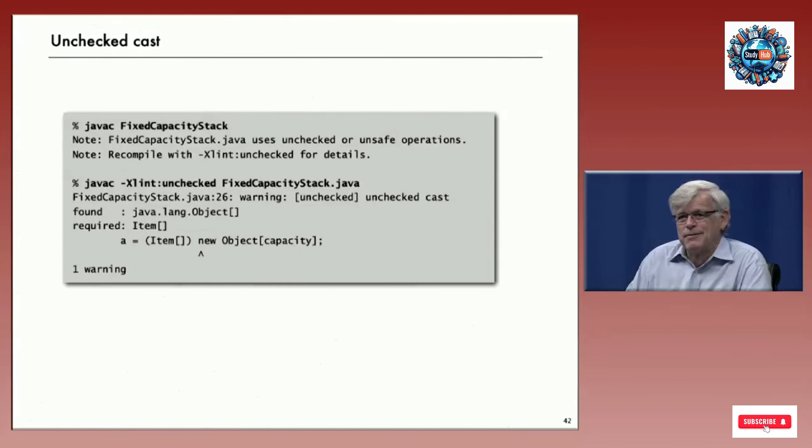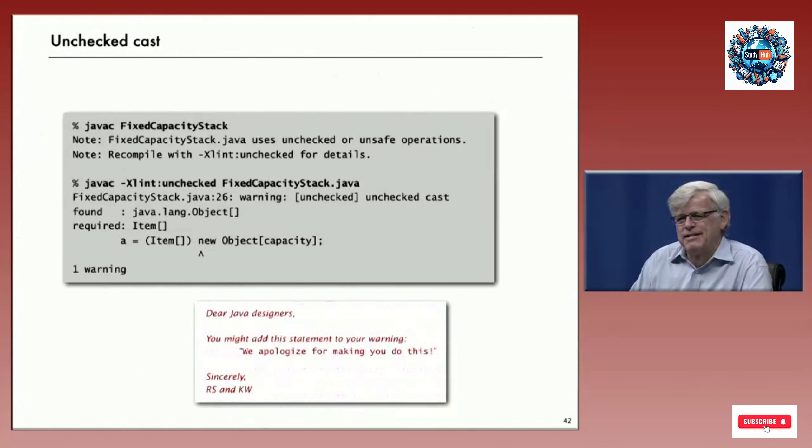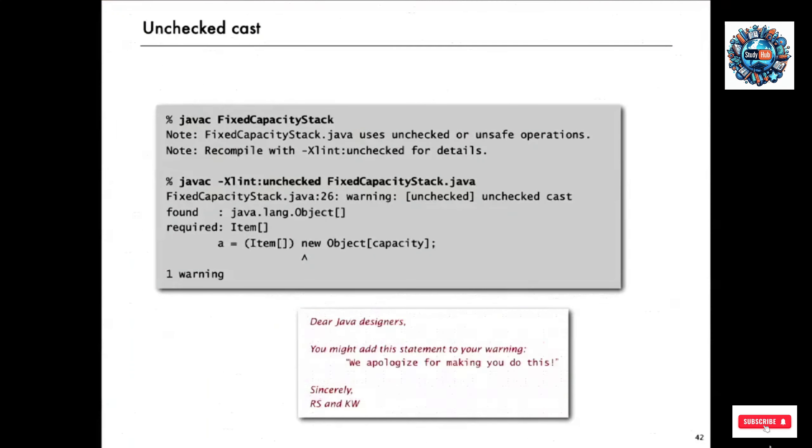Now when we compile this program, we get a warning message from Java. It says that we're using unchecked or unsafe operations and we should recompile with -Xlint:unchecked for details. We can go ahead and do that and it says that you have put in your code an unchecked cast, and we're warning you about that because you shouldn't be putting in unchecked casts.